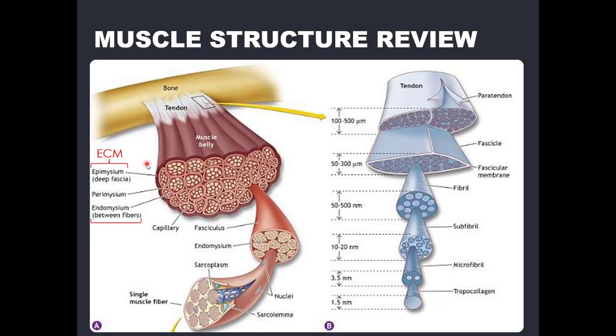I want to first begin by reviewing skeletal muscle anatomy starting from the macro level to the micro level. We must understand the levels of organ physiology. The most macro, largest level would be the organ tissue level — what we can see with the naked eye. An organ is a tissue or group of tissues that exists for a particular function in the human body, which in the case of muscle would be to contract and produce forces. The skeletal muscle organ is not just made up of muscle tissue, but also connective tissue. The network of connective tissue in skeletal muscle is commonly referred to as the myofascia.